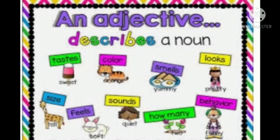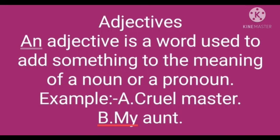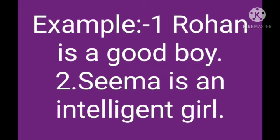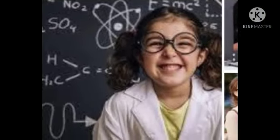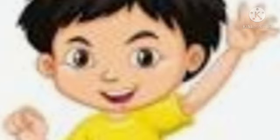Good morning students. Today we will start a new lesson: Adjective. I hope you all have learned this chapter in your previous class. Words that describe a noun or pronoun are called adjectives — all the describing words are known as adjectives. For example: Rohan is a good boy. Seema is an intelligent girl. Good and intelligent are adjectives since they describe the nouns boy and girl.